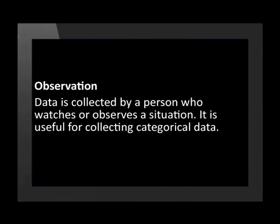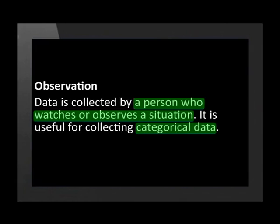In an observation, data is collected by a person who watches or observes a situation. It is useful for collecting categorical data. For example, observations are useful when a marketing company needs to see what demographics buy a particular product — counting how many young, middle-aged, and elderly people buy a certain brand of cereal — so they can better market the product to the correct age group.